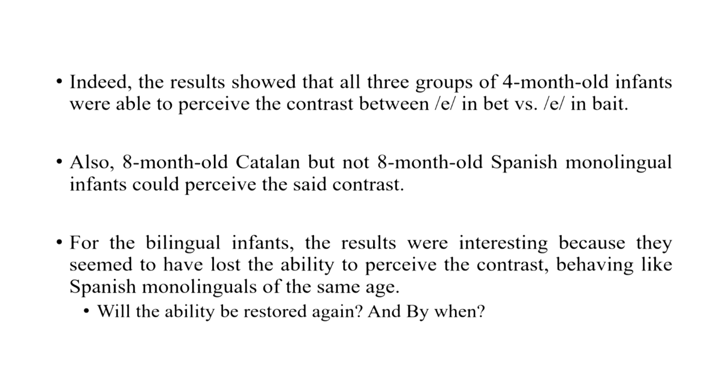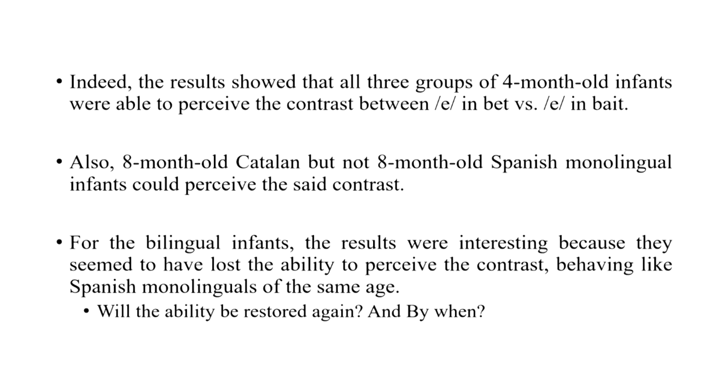The results showed that for all three groups of four month olds, they were able to perceive the phonemic contrast between the two vowels, which is perfectly plausible. Also, eight month old Catalan monolinguals but not eight month old Spanish monolinguals could perceive the contrast, which is also perfectly plausible — eight month old Spanish monolingual infants are moving more towards language-specific phonemic contrasts.